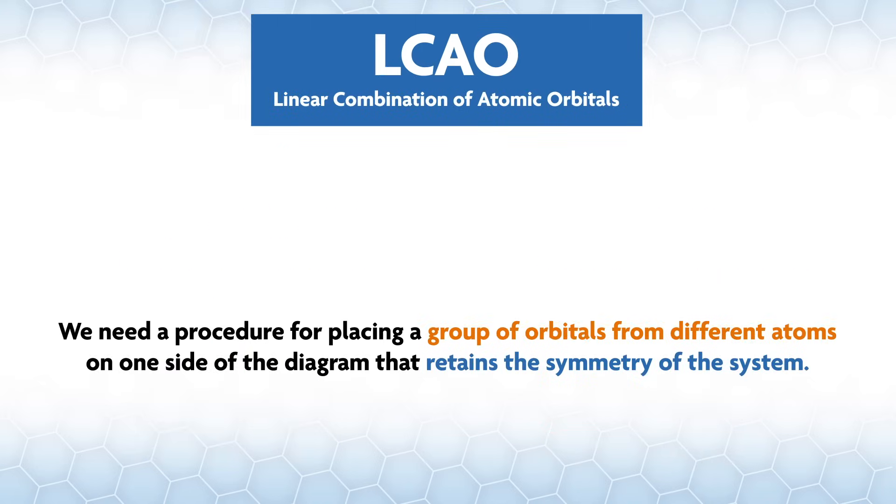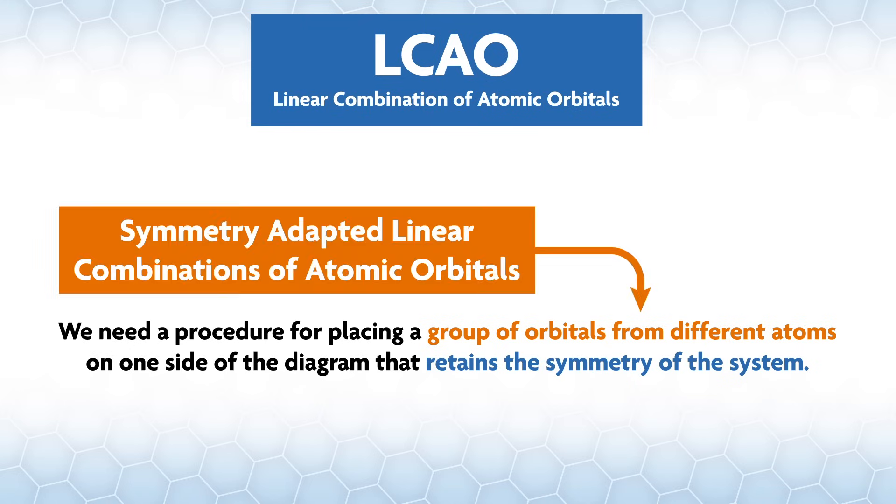To do this, we need a procedure for placing a group of orbitals from different atoms on one side of the diagram that retains the symmetry of the system. We call these groups of orbitals symmetry adapted linear combinations of atomic orbitals, or SALC AOs, or just SALCs.